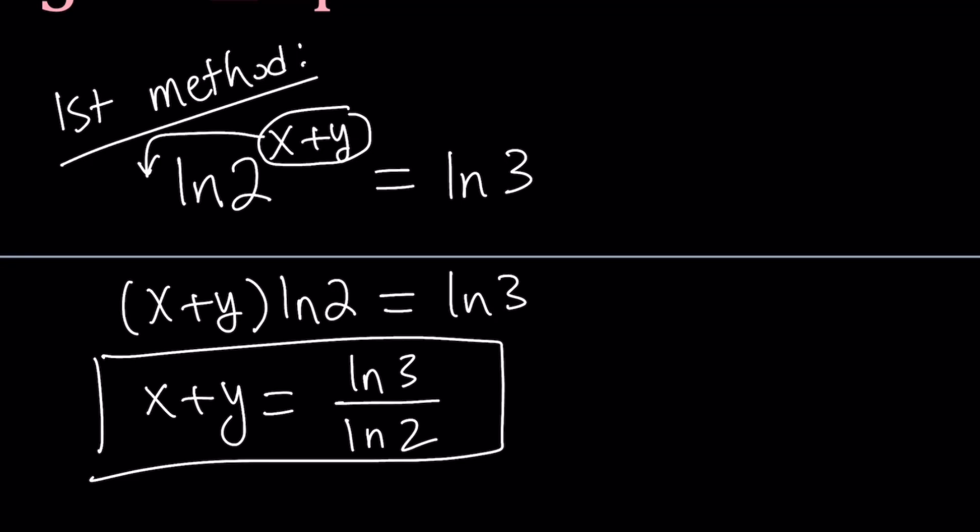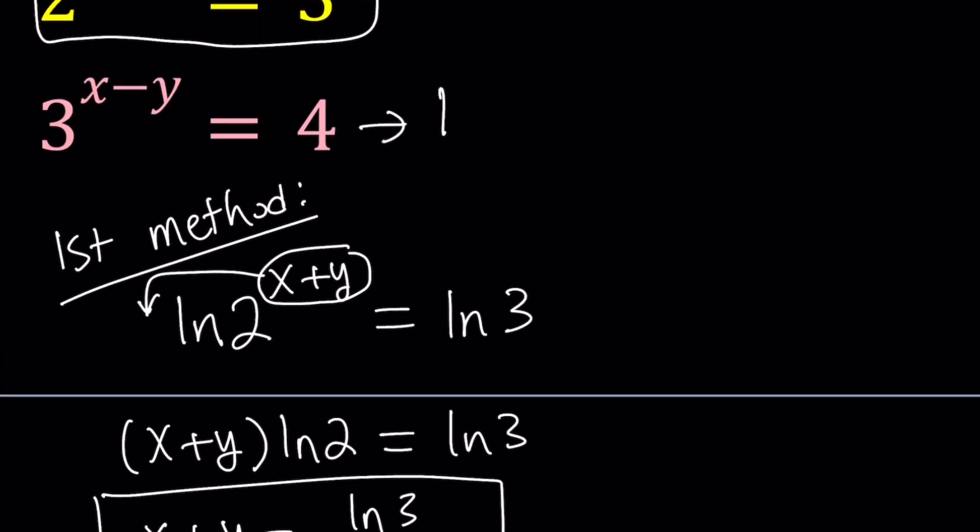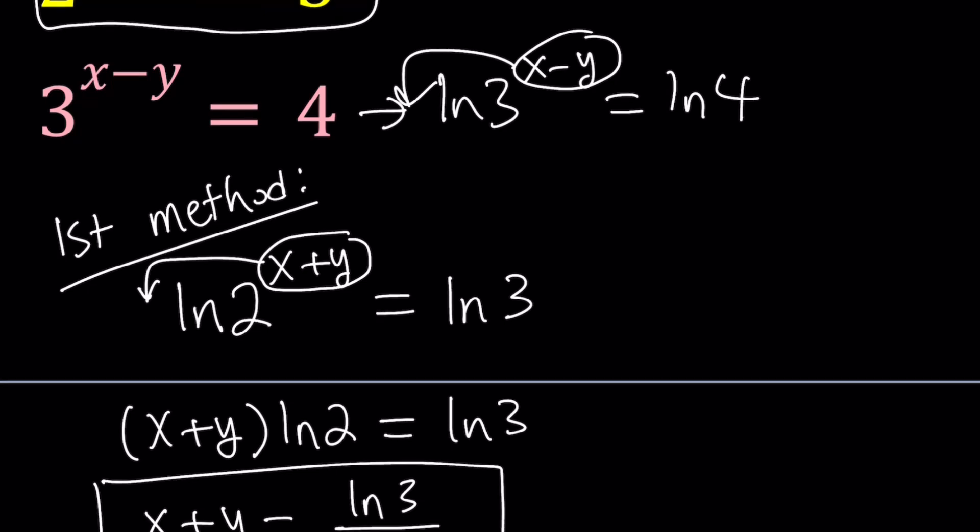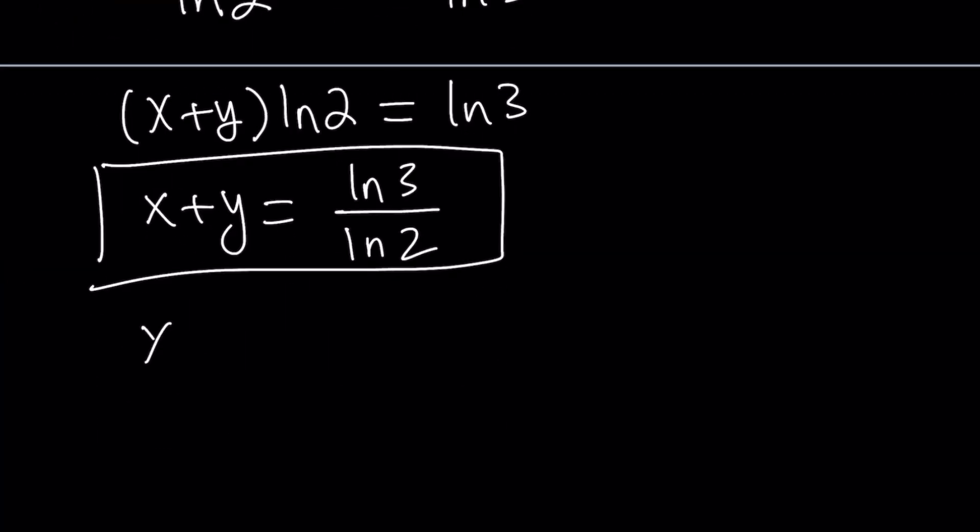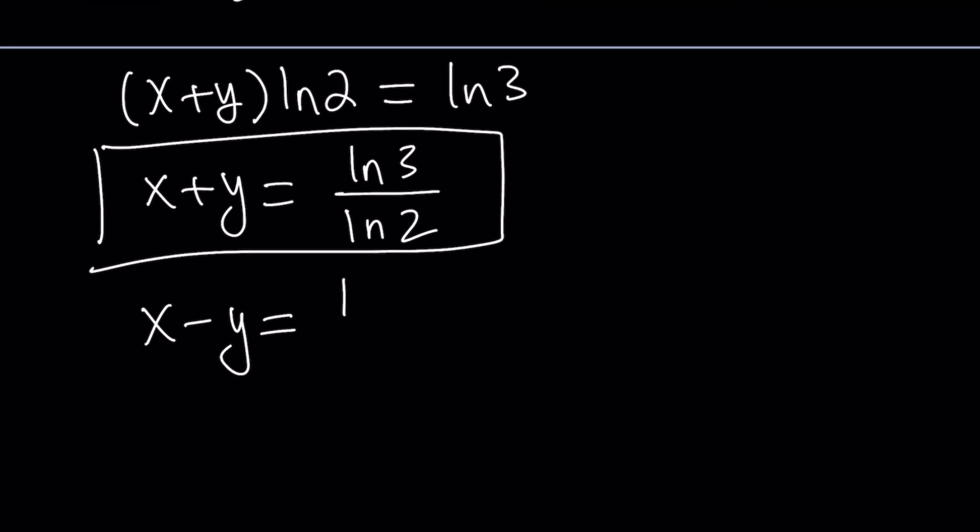Now similarly, if we ln both sides here, we get the same thing pretty much. We can move this to the front, and then divide both sides by ln 3. x minus y can be written as ln 4 over ln 3.